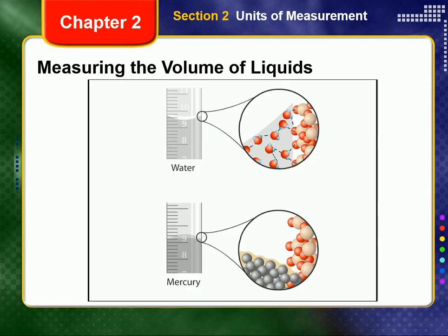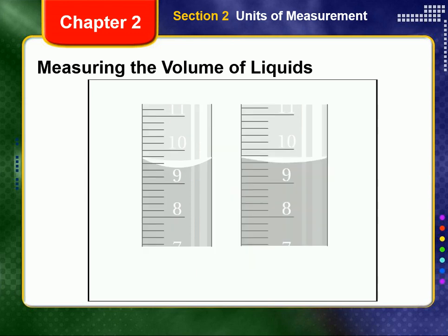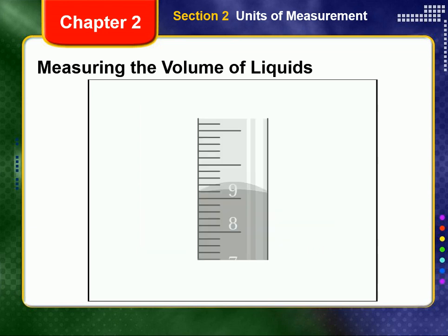Liquids have adhesion. Water, for instance, adheres to glass, which creates a meniscus and slightly complicates the measurement of liquid volume in a graduated cylinder. Water forms a meniscus where the liquid curves up the sides of the cylinder. To measure the volume of water in a graduated cylinder, read the value at the bottom of the meniscus — the picture shows a value of 9.5 milliliters. A smaller graduated cylinder creates more curvature in the meniscus than a larger one. Mercury forms a convex meniscus where the liquid curves down; to measure the volume of mercury, read the top of the meniscus.